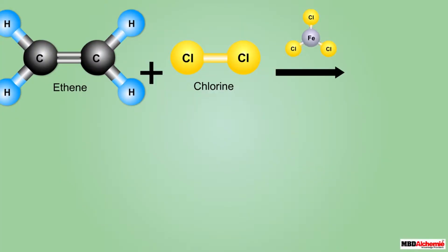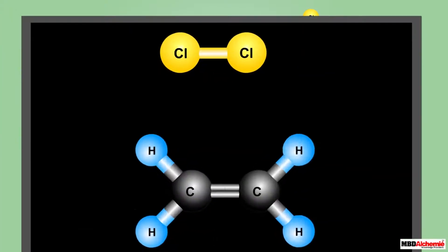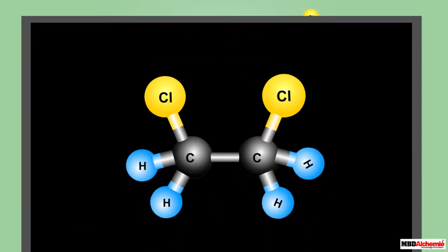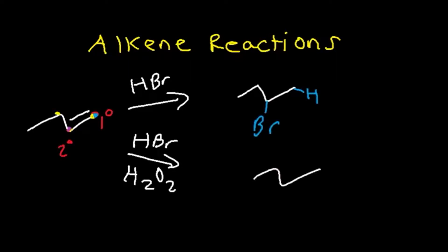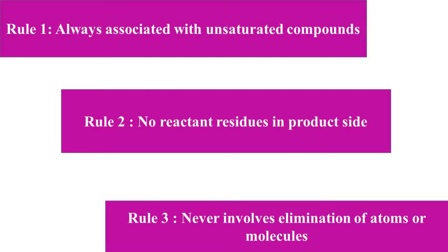The types of addition reactions include hydrogenation, hydration, halogenation, and hydrohalogenation. The hydrogenation reaction involves the addition of a hydrogen molecule. In hydration, a water molecule is added. The addition of a halogen is called the halogenation reaction. In hydrohalogenation, the hydrogen halide gets added to the alkene.